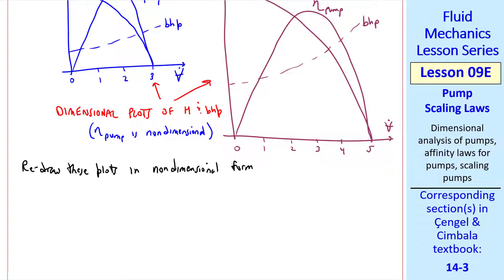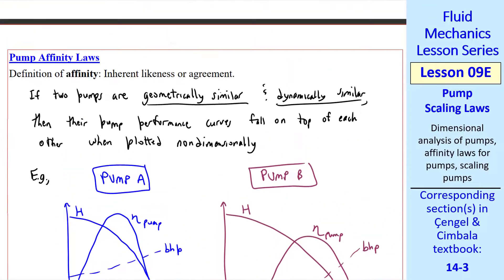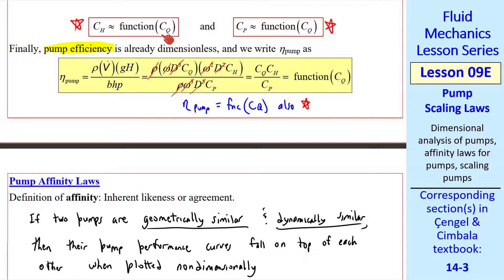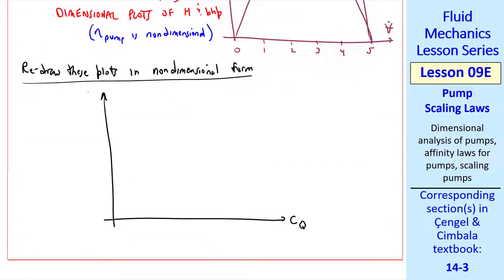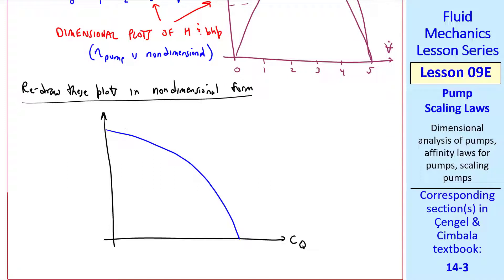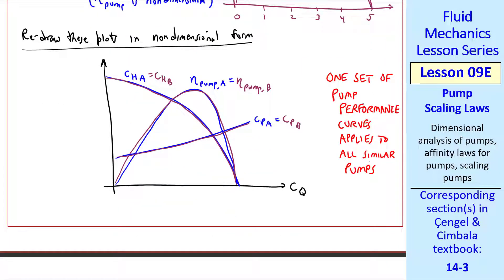Now let's redraw these plots in non-dimensional form. Going back to our equations, instead of head we'll plot CH. Instead of volume flow rate we'll plot CQ as our x-axis. And instead of BHP we'll plot CP. And then eta pump, of course, is also a function of CQ. So the non-dimensional plot will look something like this. Keeping our color code, pump A was blue, so this curve is CHA. Pump B was purple, so they fall on the same curve if we have dynamic similarity. Similarly, eta pump A equals eta pump B, and CPA equals CPB. The bottom line is that one set of pump performance curves applies to all similar pumps.